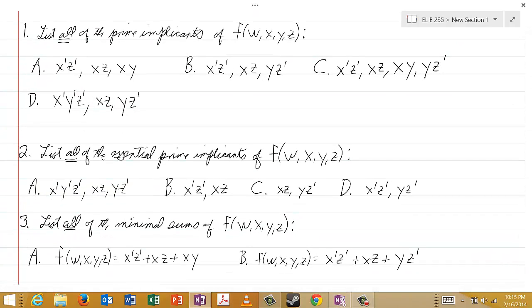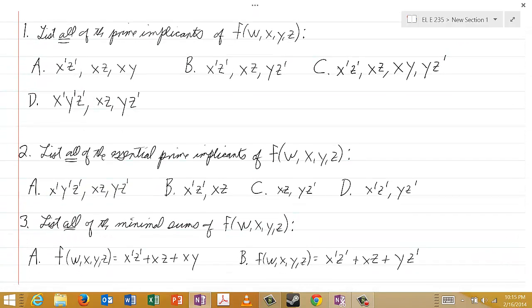Number two: now we want a list of all the essential prime implicants of that function. The choices here are: A) x'y'z', xz, and yz'; B) x'z' and xz; C) xz and yz'; and finally D) x'z' and yz'.